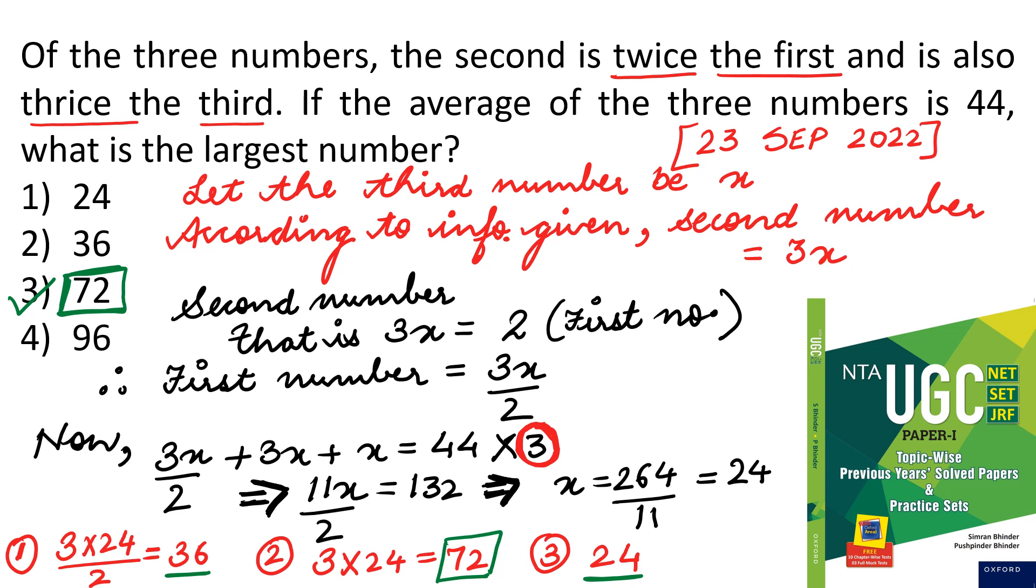Based upon that, we can write it down. Let the third number be x. If we assume the third number as x, then according to information given in the question, second number will be equal to 3x, because the second number is thrice the third number. And the second number, that is 3x, it is equal to twice of the first number, therefore, the first number is equal to 3x upon 2. So, what next we will do? First number, that is 3x upon 2, plus the second number, that is 3x, plus third number x. Now we can add up these numbers - 3x upon 2 plus 3x plus x is equal to 44, which is the average given in question, into 3.